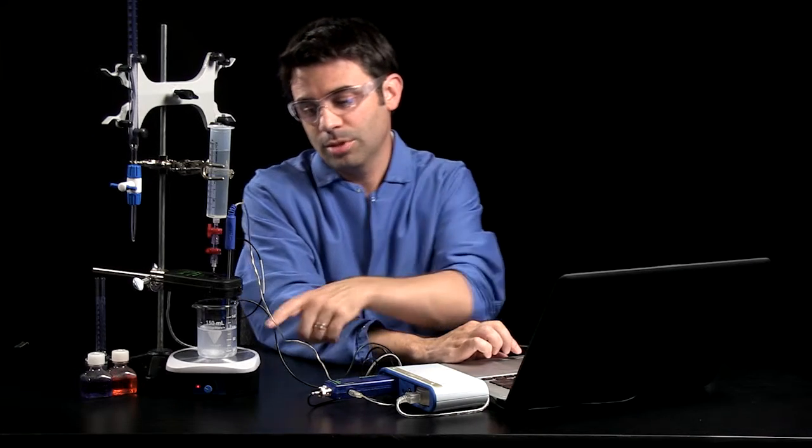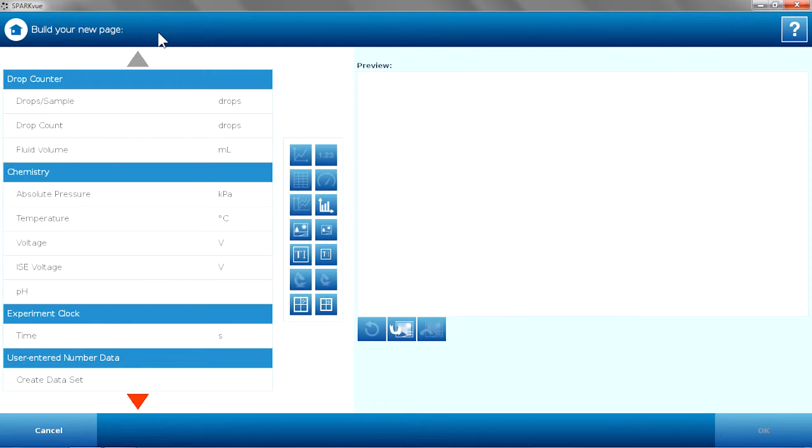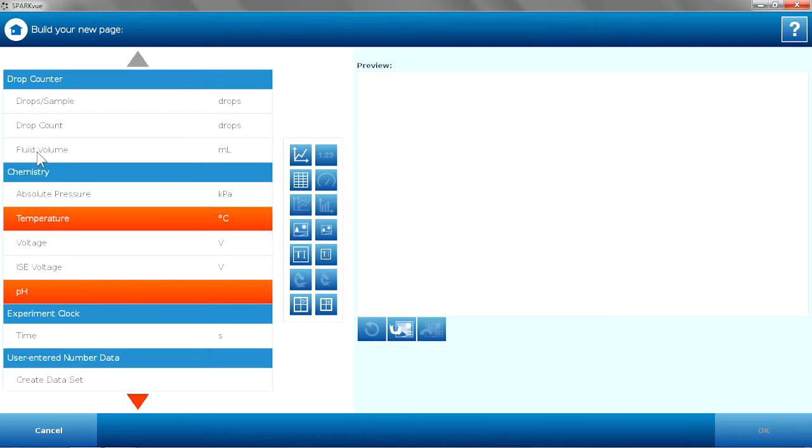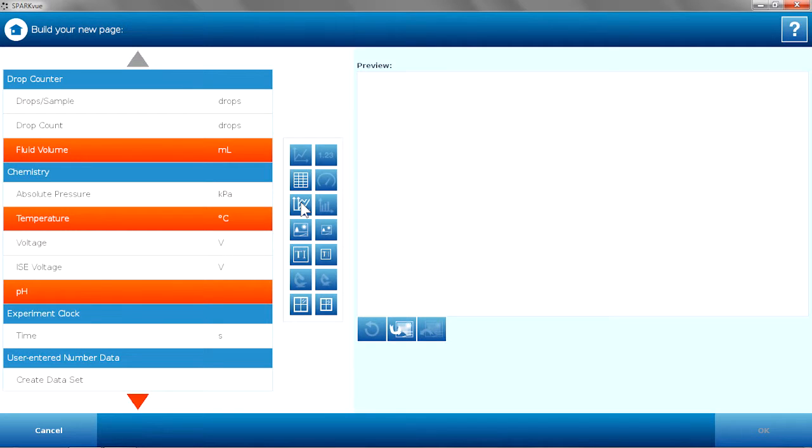Now I can go even further with this, because I did have the temperature probe, the stainless steel temperature probe in there. In this case, I'm going to plot my pH and temperature versus fluid volume, and just see what the data shows me. So again, using the multiple y-axis feature.